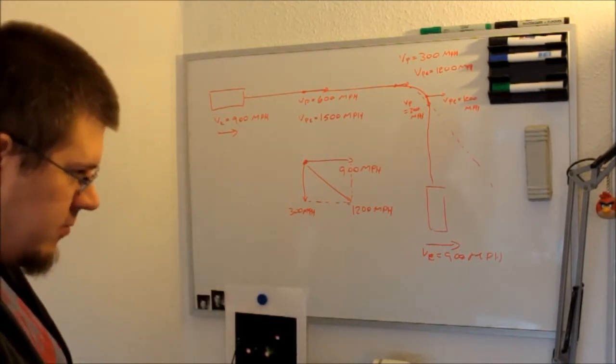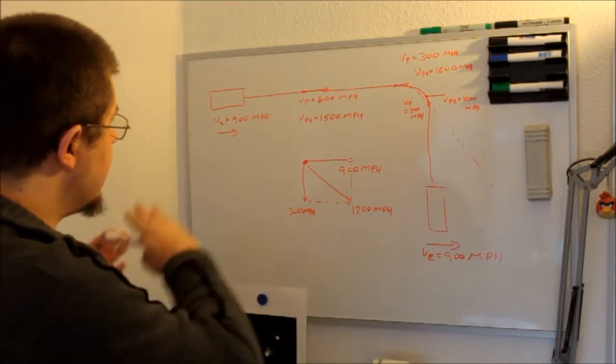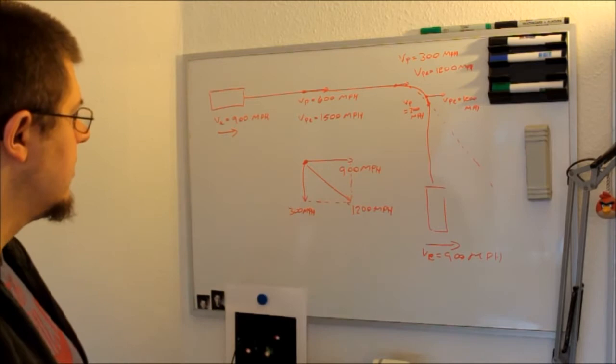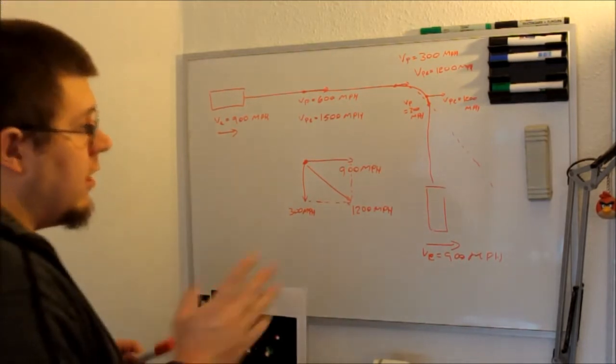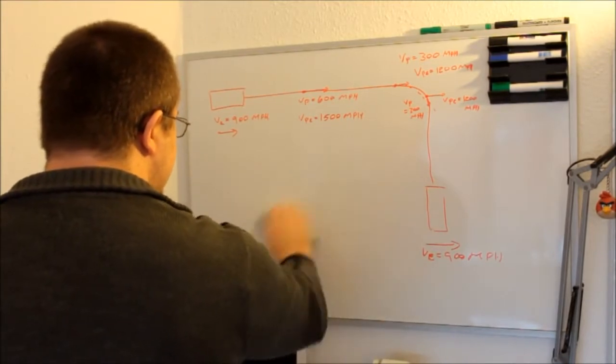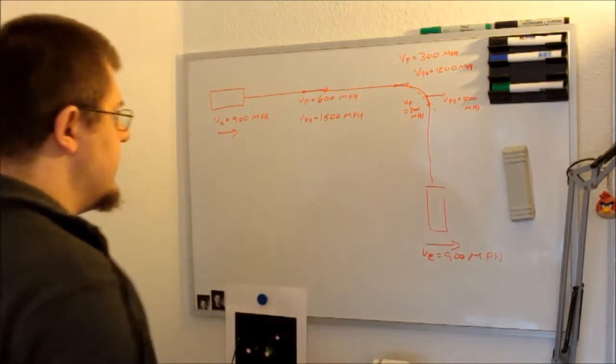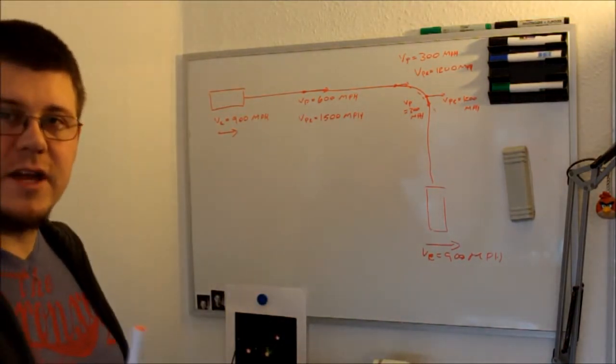So the next problem is that he says we are stationary observers seeing this system. Let's assume that. Then he is correct. But then these calculations, the total velocities are correct. But he is forgetting something.